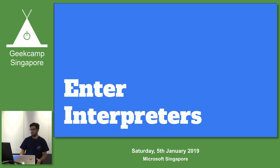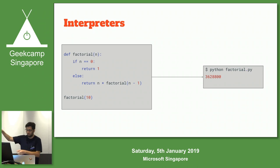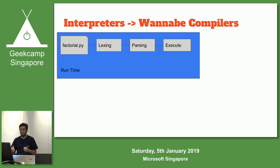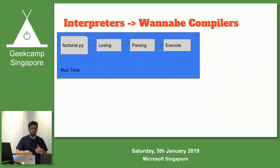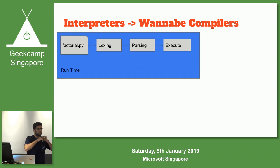So given all these problems with compiled languages, imagine it's 1996, your name is Brendan Eich, and you're tasked with creating a language in seven days for this thing called the World Wide Web. You have to build a compiler in seven days. You're not going to ship a binary. You probably write JavaScript and use this other technique called interpreters. So let's look at interpreters now - how do they work and how is that different from a compiler?